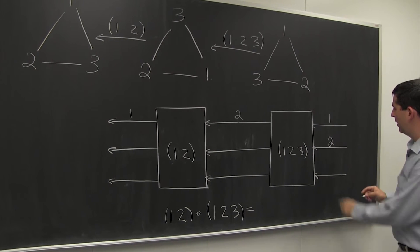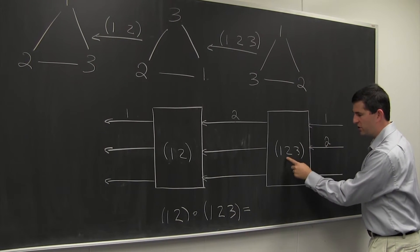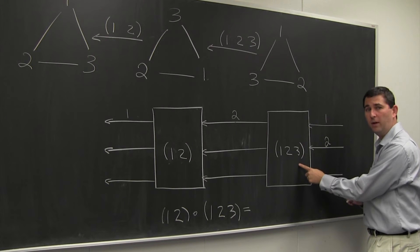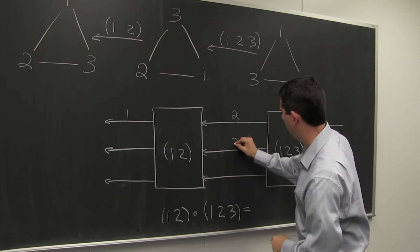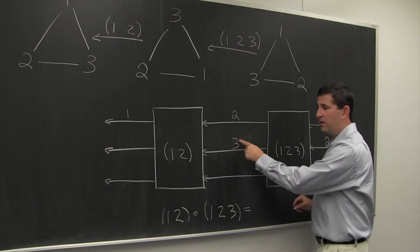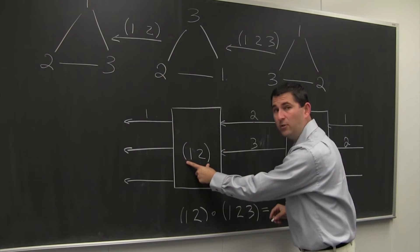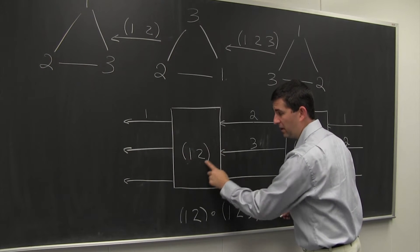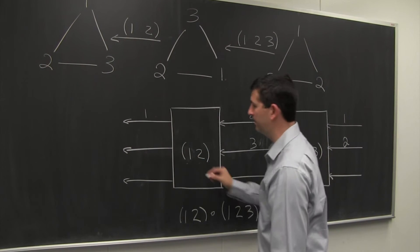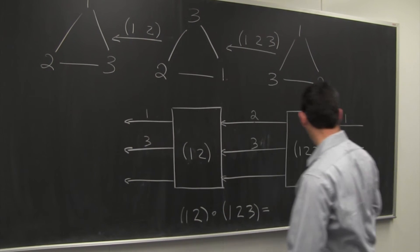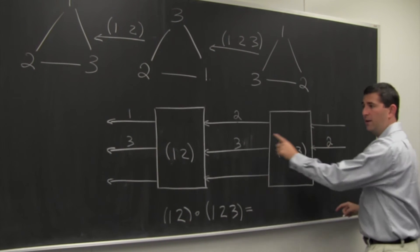Now we can try 2. 2 goes into the first function machine. It sends 2 to 3. 3 goes into the next function machine, which doesn't do anything to 3. 3 is fixed. It does not appear in the cycle notation. So in total,